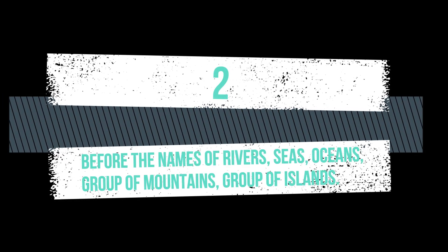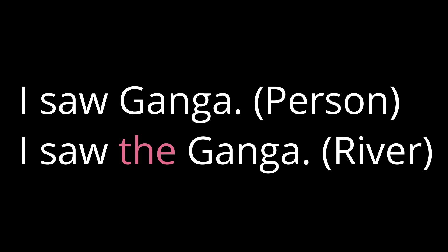The second point is: 'the' is used before the names of rivers, seas, oceans, group of mountains, and group of islands. Examples: the Ganga, the Yamuna, the Kaveri, the Thames, the Bay of Bengal, the Pacific Ocean, the Himalayas, the Aravallis. If I say 'I saw Ganga,' the meaning is I saw a person named Ganga. But if I say 'I saw the Ganga,' I saw the river Ganga. Similarly, 'I saw Krishna' means I saw a person, but 'I saw the Krishna' means I saw the river Krishna.